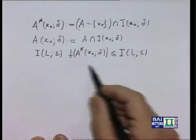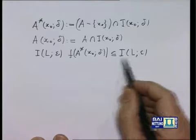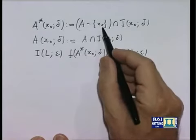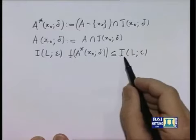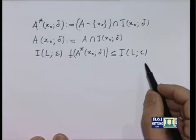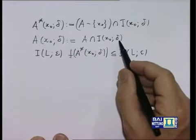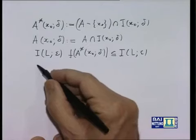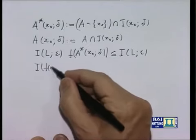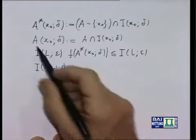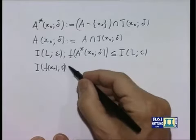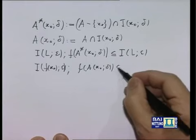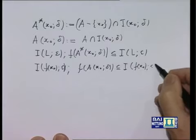Come formuleremo la definizione di continuità? Si potrebbe dire: basta al posto di L scrivere f(x₀). Nel caso di una funzione continua è inutile escludere x₀, perché f(x₀) certamente appartiene a qualsiasi intorno centrato in f(x₀). Ecco perché anziché l'insieme A*, considero l'insieme A(x₀, delta), e la definizione di funzione continua in un punto diventa: comunque si fissi un intorno del punto f(x₀), siamo capaci di trovare un delta tale che l'immagine mediante F dell'insieme A(x₀, delta) sia contenuta nell'intorno centrato in f(x₀) e raggio epsilon.